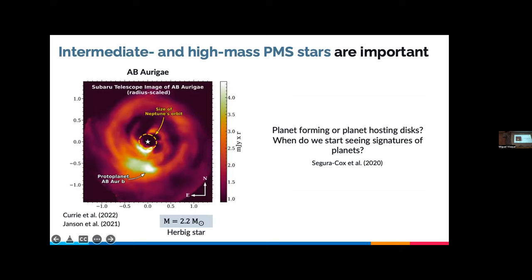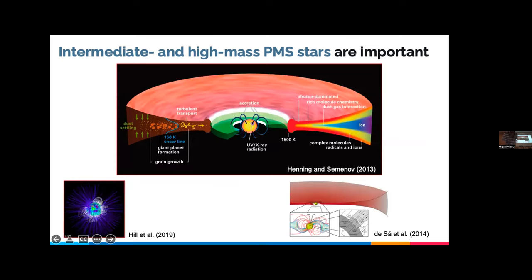The fact that we struggle so much to find protoplanets raises the question of whether we're seeing planet-forming or planet-hosting disks. It seems likely that we are seeing the leftovers of planet formation that already happened at much earlier stages, which is why it's so complicated to find forming planets interacting with the disk.